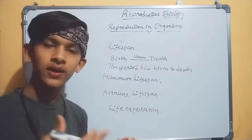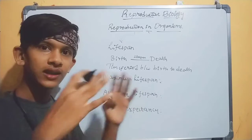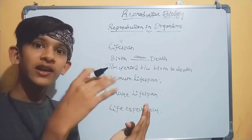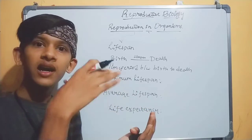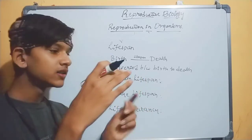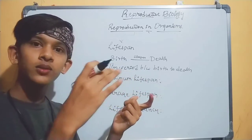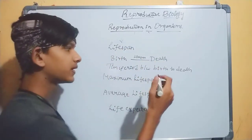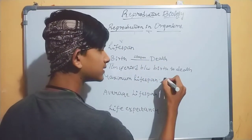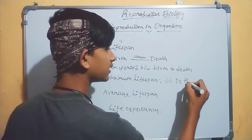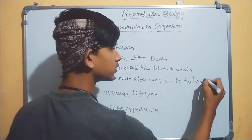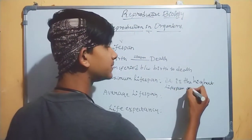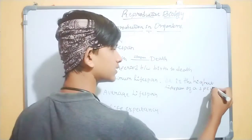For example, frog — Rana tigrina — is a species. In that species, one Rana tigrina is known to have lived 100 years. So it is the highest or maximum life span of that species.